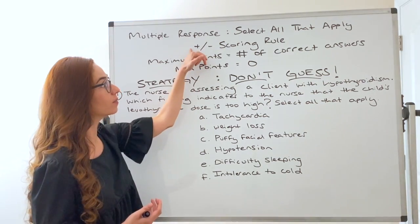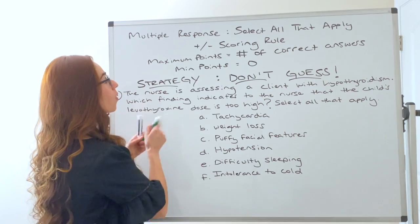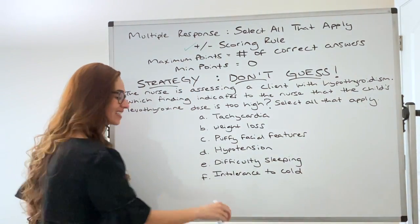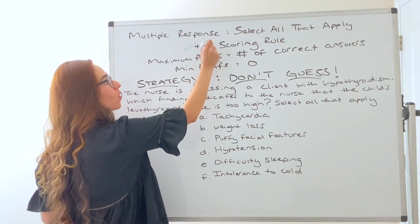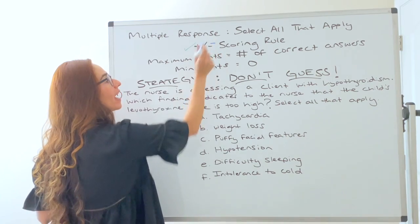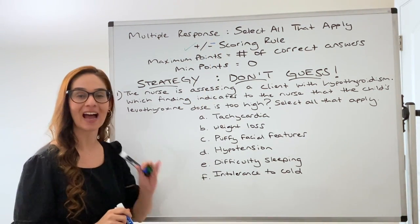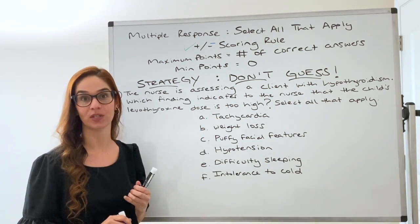You literally are going to only pick the answers you absolutely know. And why this is a good strategy is because with this scoring model remember you get one point for every question you get right. However they take away points for every question you get wrong.